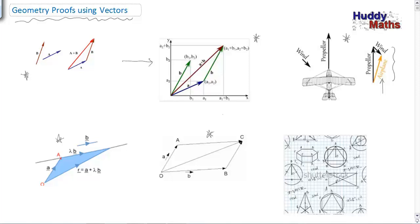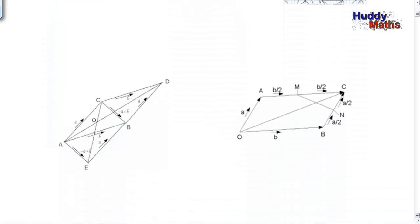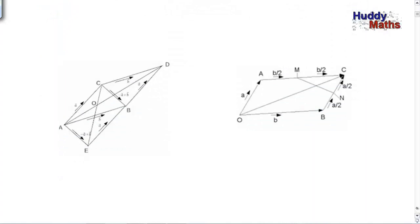We looked at forming a parallelogram when adding two vectors. Now we're going to tackle things like proving sides are parallel, equal, or perpendicular using vectors to describe the sides. Here's a complicated figure where all the sides are written in terms of vectors, so we might be able to find relationships between them. We're going to do all of this without coordinates and without Euclid's theorems — we're going to use vectors.